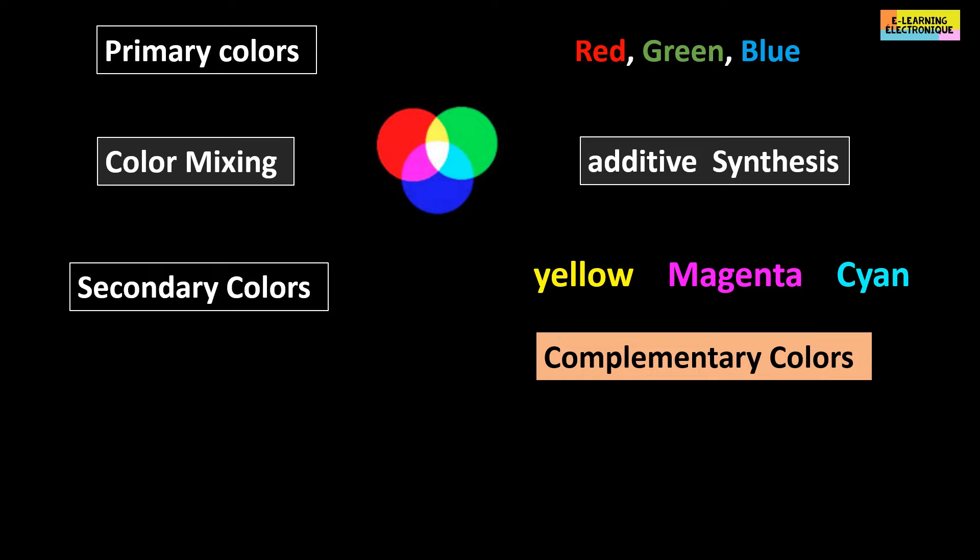Example for yellow, the complementary color is blue because the mixture red plus green plus blue gives white. For magenta, it is green, and for cyan, it is red.